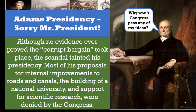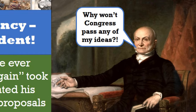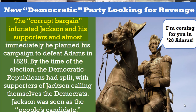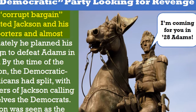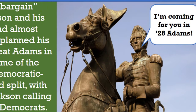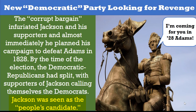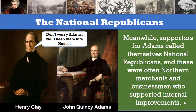Although no evidence ever proved the Corrupt Bargain took place, the scandal tainted Adams' presidency. Most of his proposals for internal improvements to roads and canals and the building of a national university were denied by the Congress. The Corrupt Bargain infuriated Jackson and his supporters, and almost immediately he planned his campaign to defeat Adams in 1828. By the time of the election, the Democratic-Republican Party had split, with supporters of Jackson calling themselves the Democrats. Jackson was seen as the common man's candidate, while supporters of Adams called themselves National Republicans — often Northern merchants and businessmen who supported internal improvements.